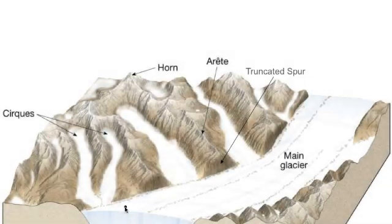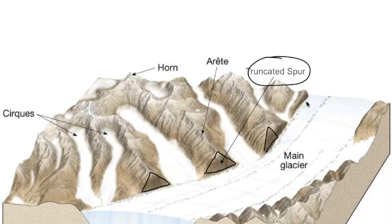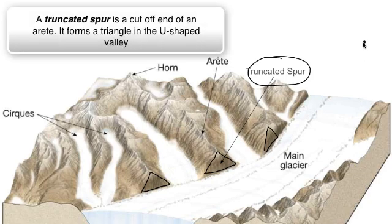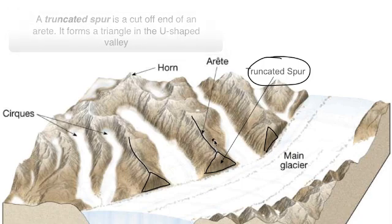See this triangular formation here, and another one here, and another one here — these are called truncated spurs. The word truncate means to cut off, and a spur is a little thing that sticks out. So we have this little thing that got cut off, forming these triangular formations. A truncated spur is really the cut-off end of an arête. It's different from a horn: a horn is the sharp peak at the top, while a truncated spur is where an arête gets cut off by the main glacier bulldozing its way down.